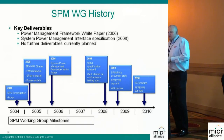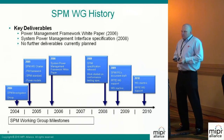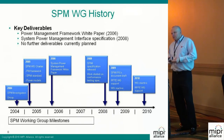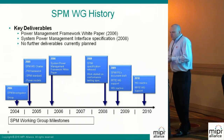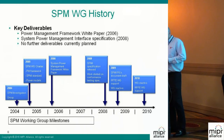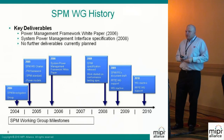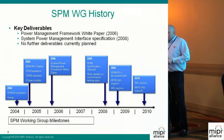There are two key deliverables: first is the power management framework white paper delivered in 2006, and the big deliverable is the SPMI specification delivered in 2008. There are currently no further deliverables planned. The working group was started in 2004 with the investigation; in 2005 the charter was established; in 2006 the white paper was delivered; and in 2008 the spec was released. Currently, the key personnel for the SPMI group are supporting RFP and the group is idle, with no further activities planned.